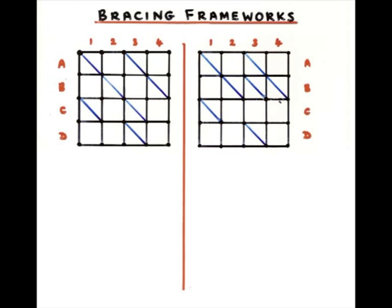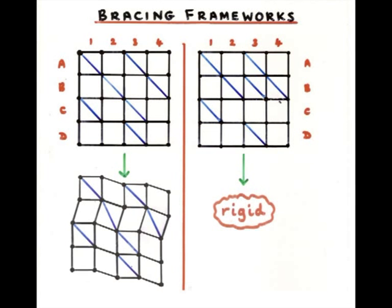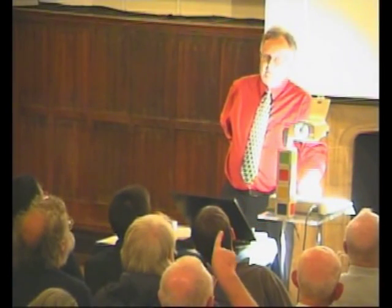But it's not obvious, is it? In fact, it's the case that the first one does distort, but the second one is rigid. And how can you decide in advance whether it's going to be rigid or not?